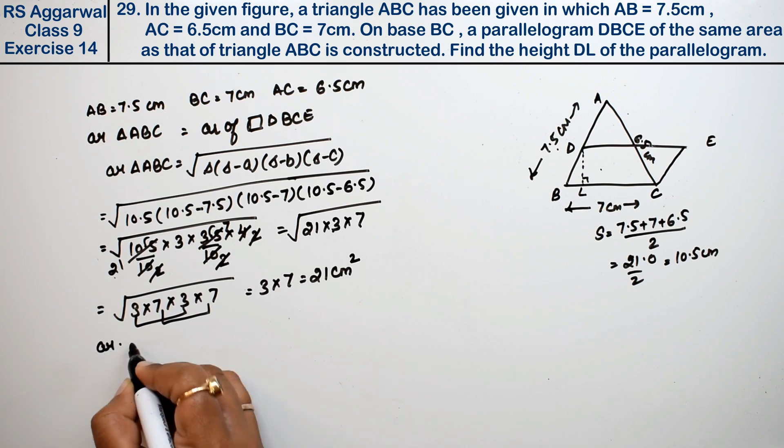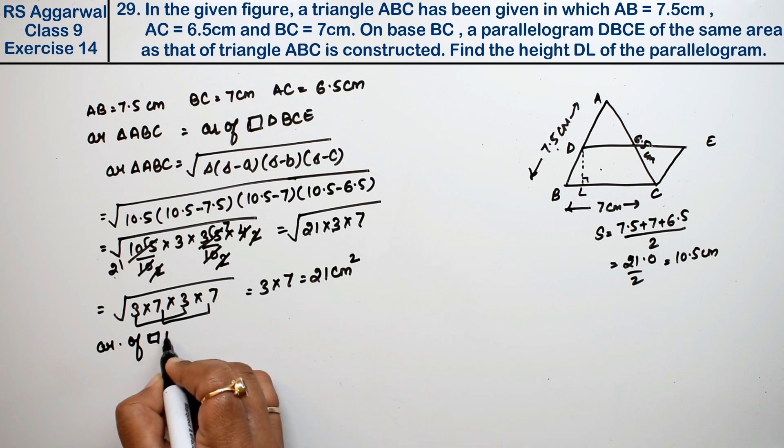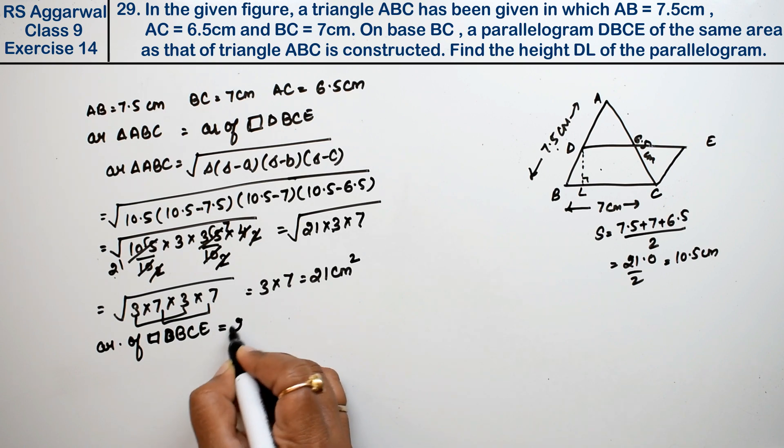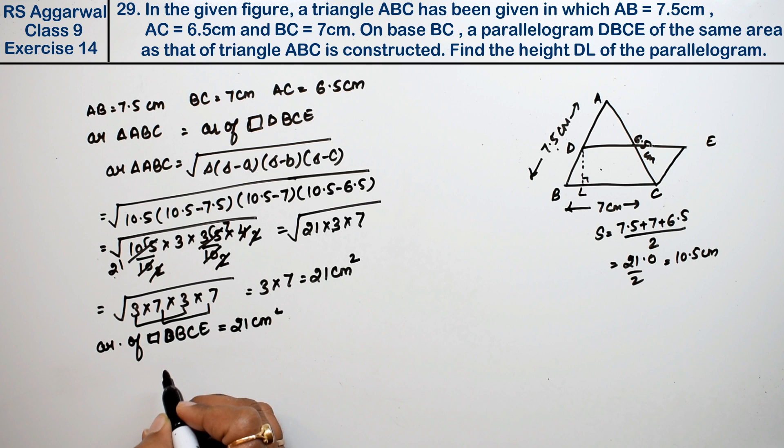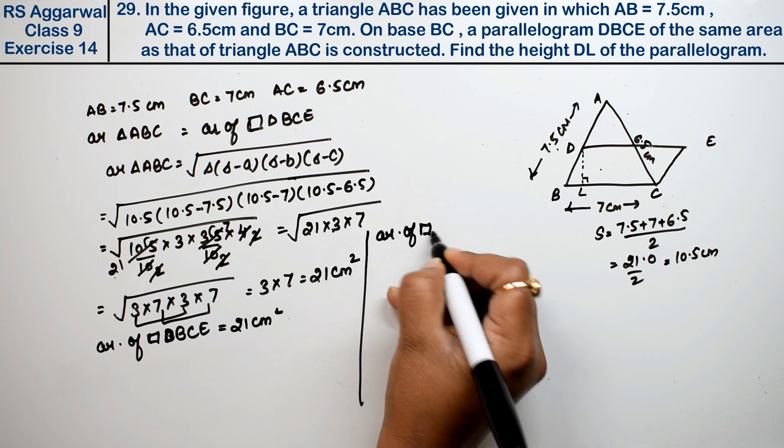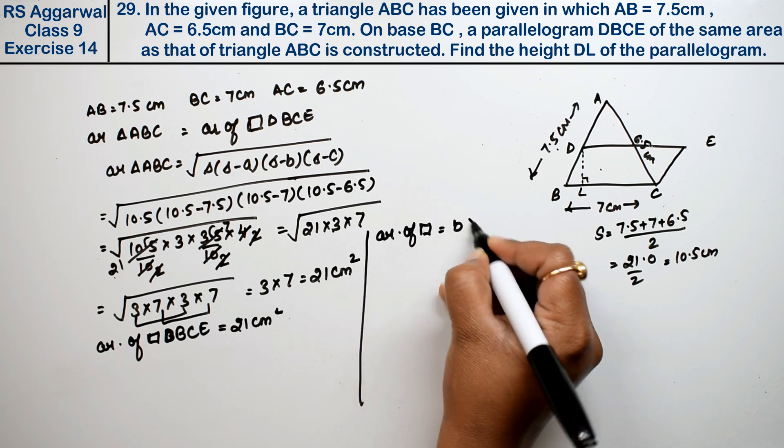Area of parallelogram DBCE is also 21 cm square. The formula for area of parallelogram is base times height.